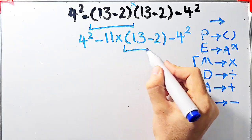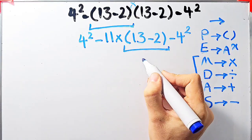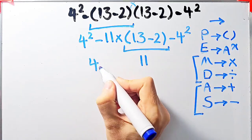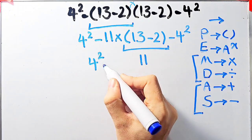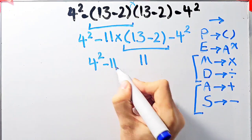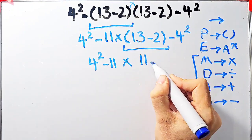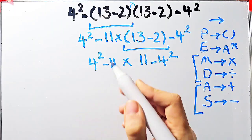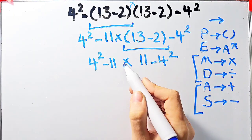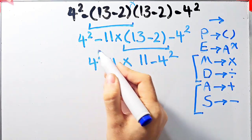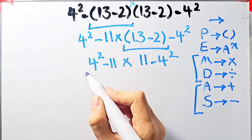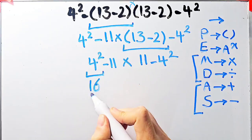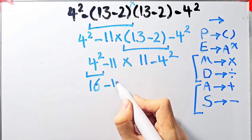Inside these parentheses we have 13 minus 2; 13 minus 2 equals 11. Now the question is 4 to the power of 2, minus 11, then times 11, minus 4 to the power of 2. Now we have exponent, subtraction, and multiplication. First we simplify the exponent: 4 to the power of 2 equals 16. Now we have 16 minus 11 times 11, then minus 4 to the power of 2 which equals 16.